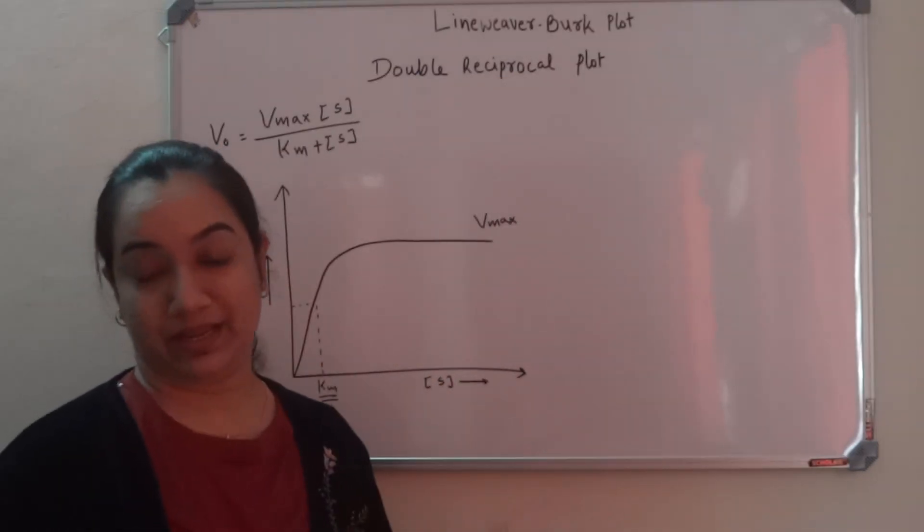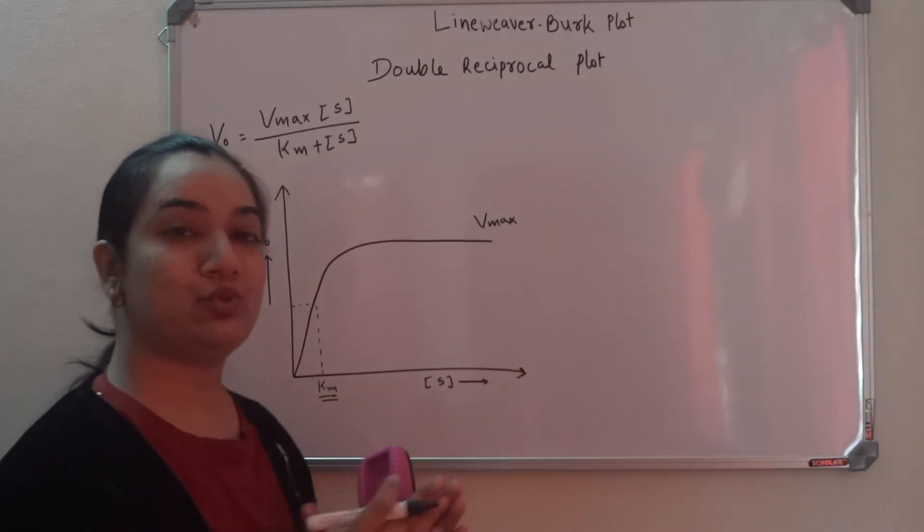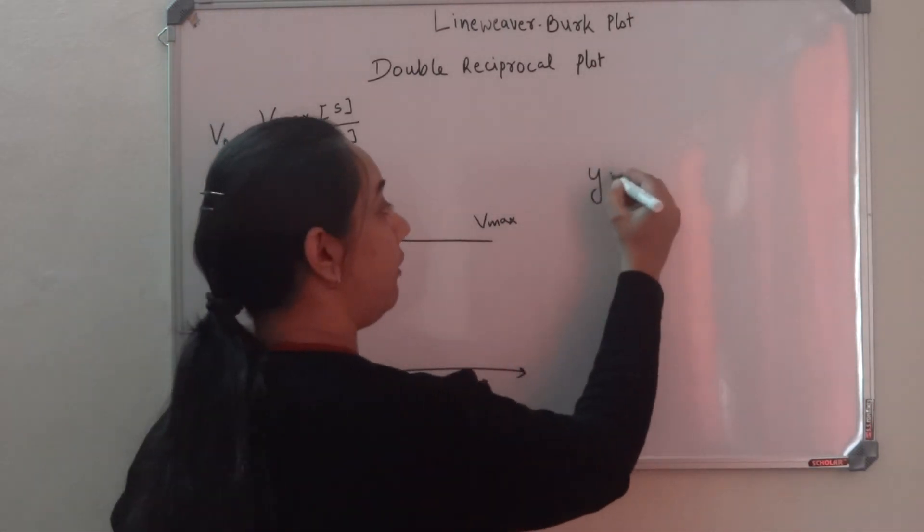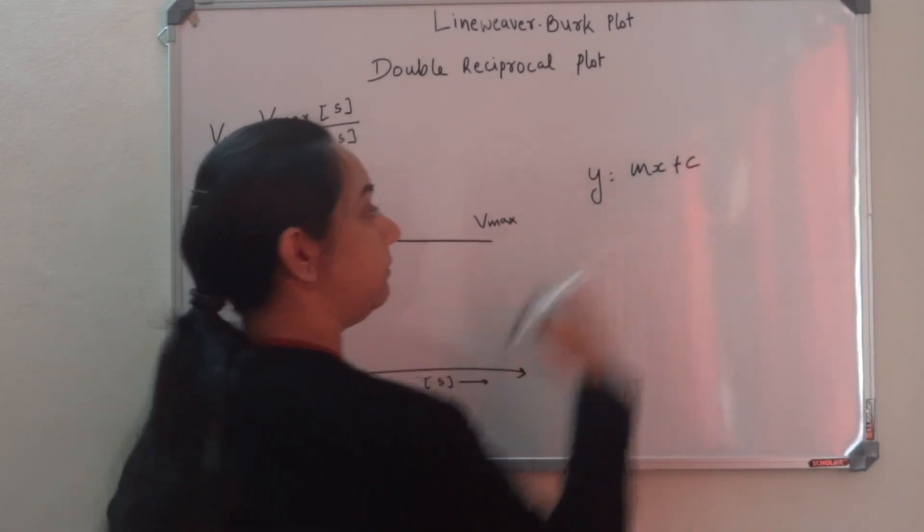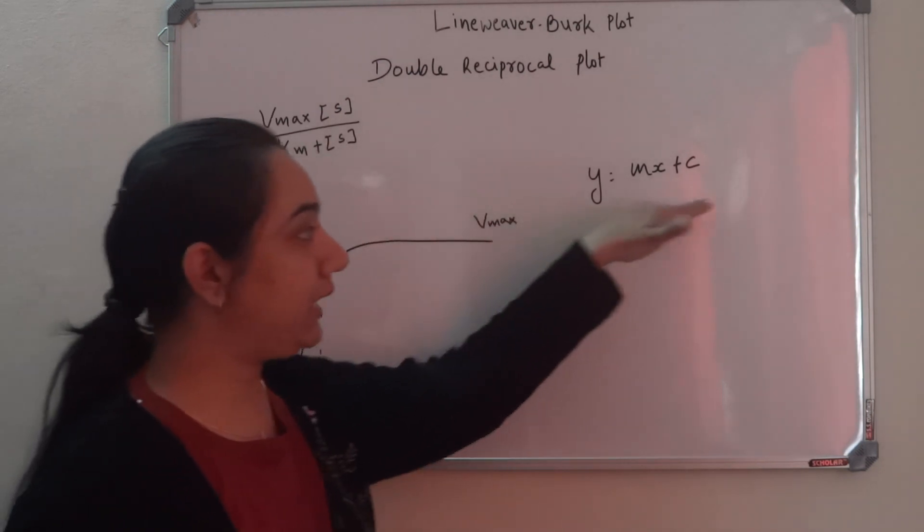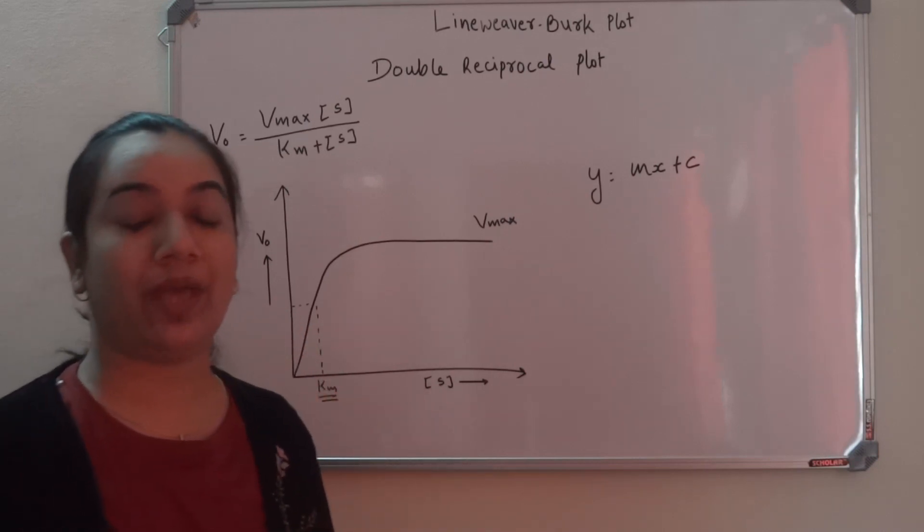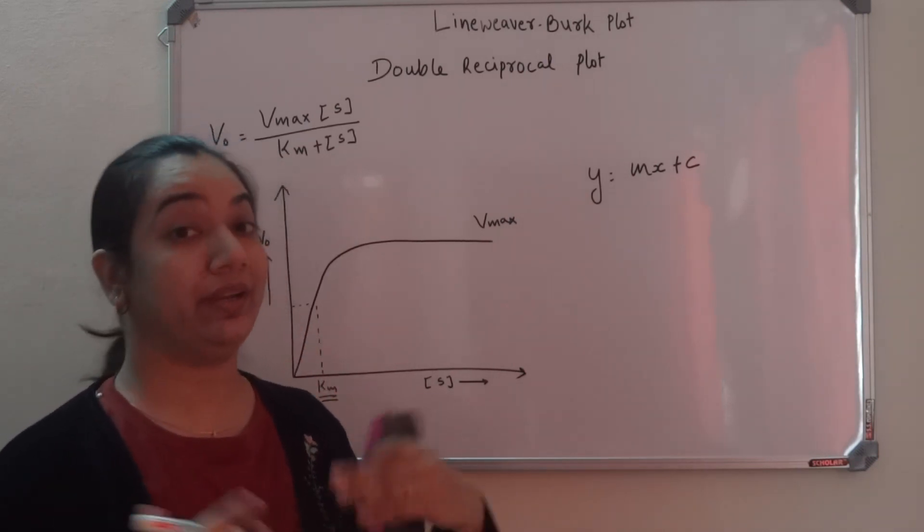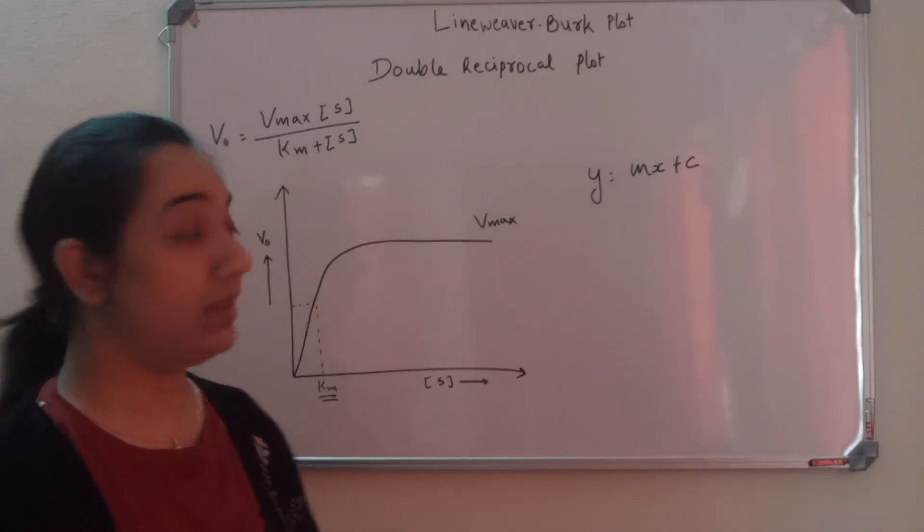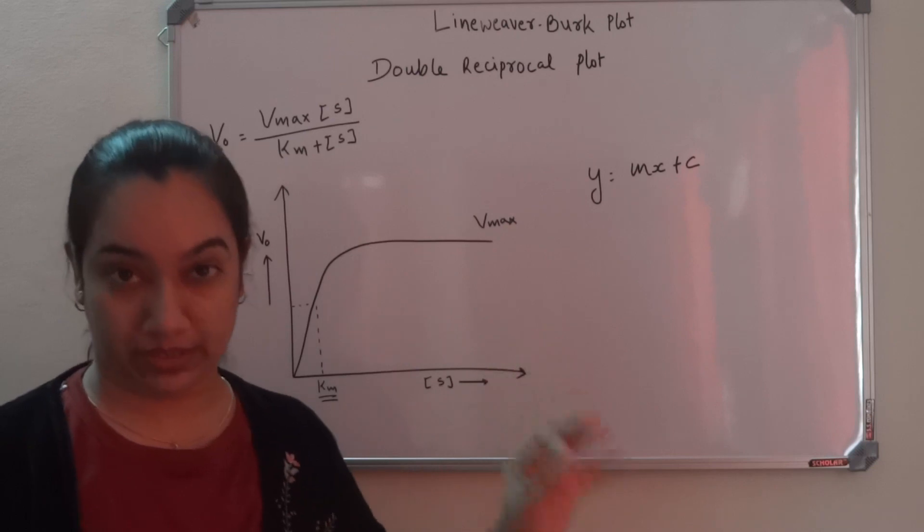So what scientists actually did is they converted this into a straight line plot. We know a straight line plot is in the form of y equals mx plus c. They rearranged this equation to get y equals mx plus c, and thus we get a straight line. Using that, it becomes very easy to experimentally derive our values and find out Vmax and Km. Let's see how exactly this MM equation is changed into the Lineweaver-Burk equation.